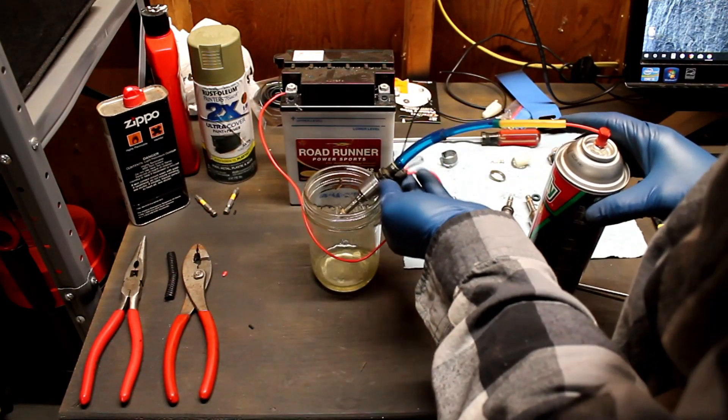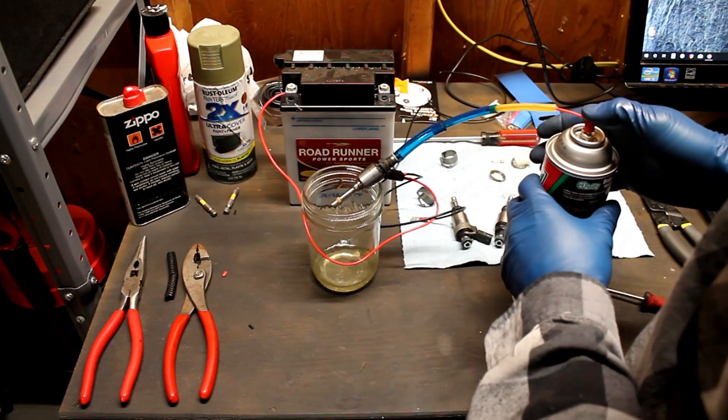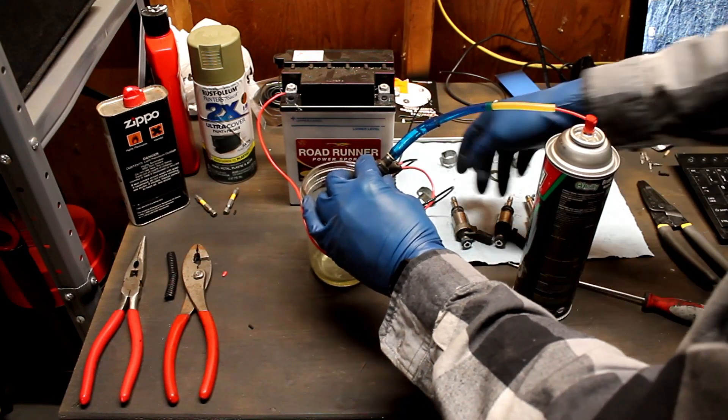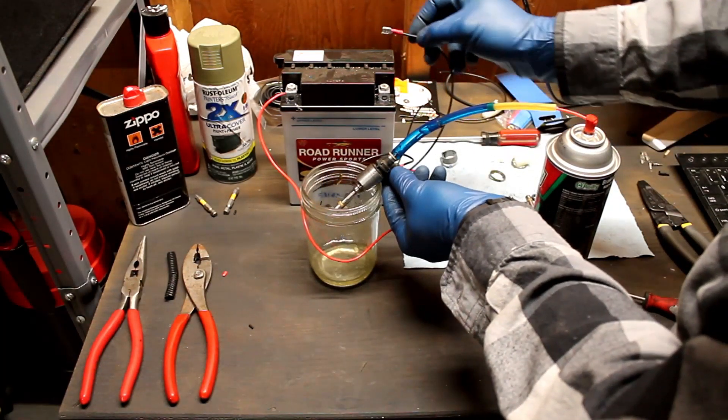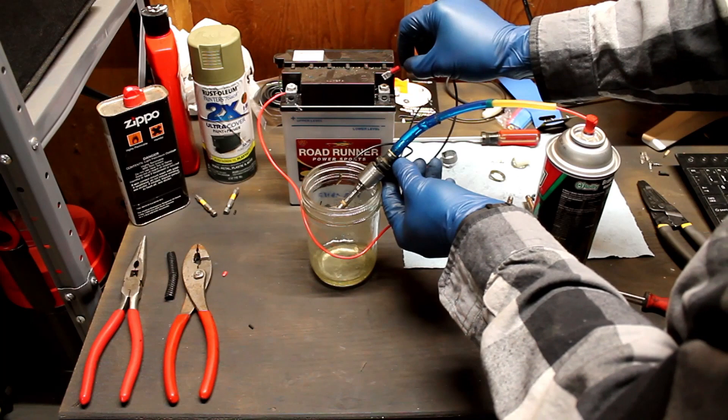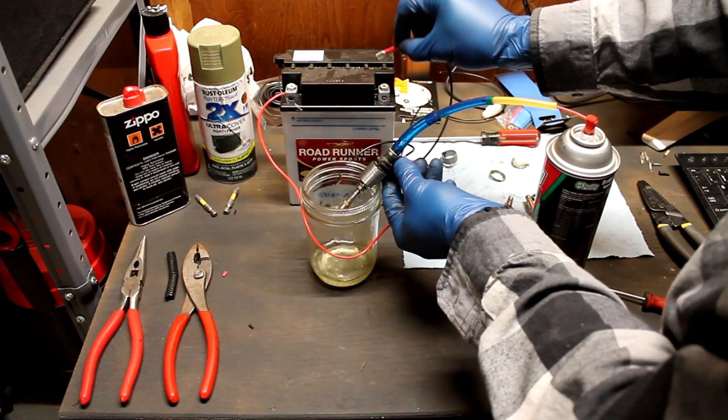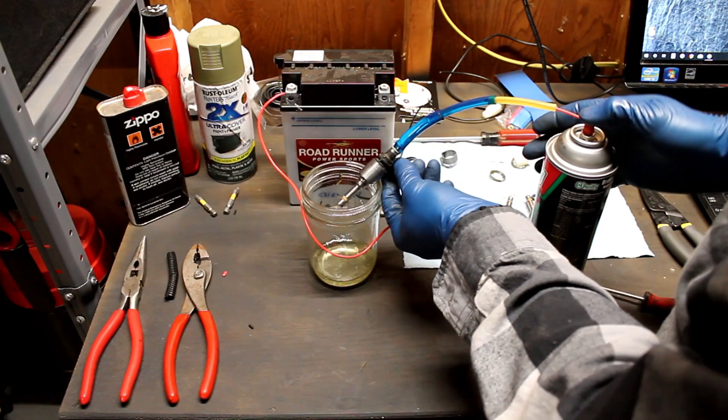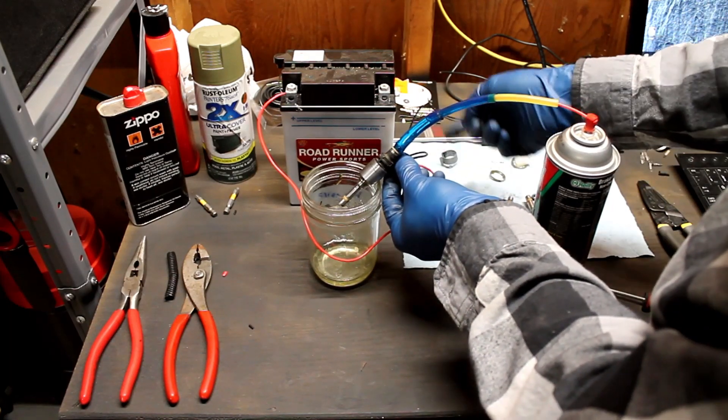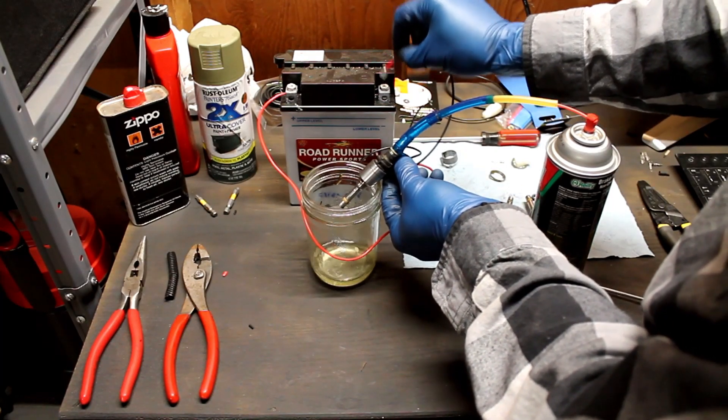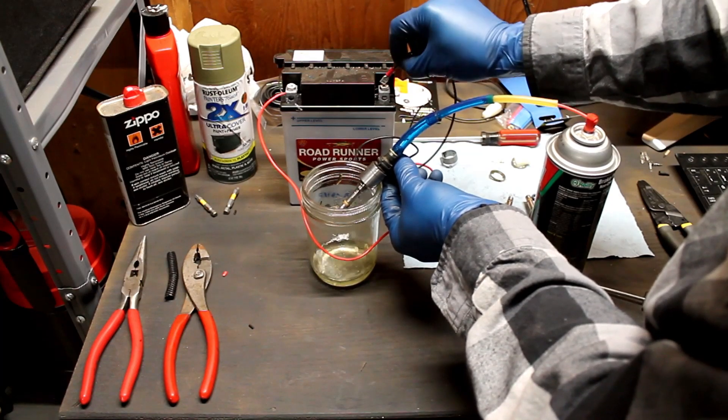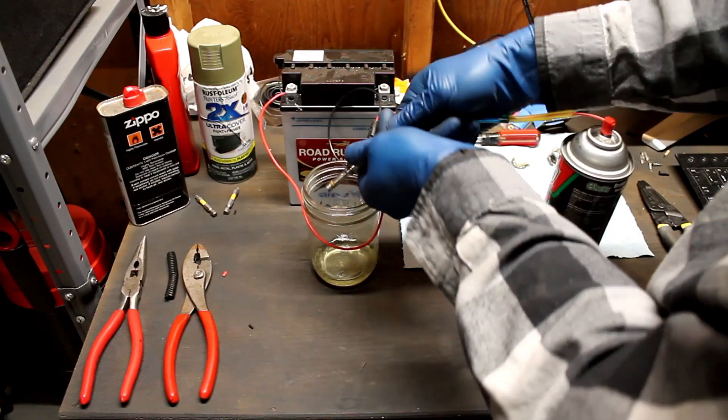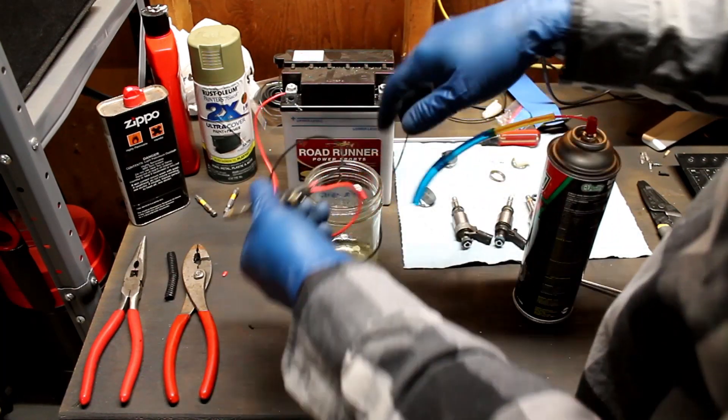So get yourself a catch can, pressurize it with the button, and then tap your negative post. Again a couple times and get it nice and clean inside there. So that's that. Now we're going to test another one.